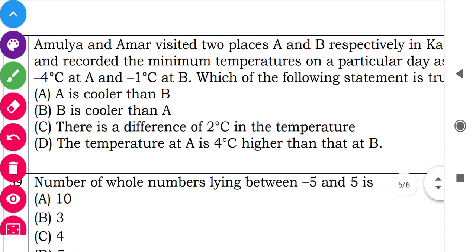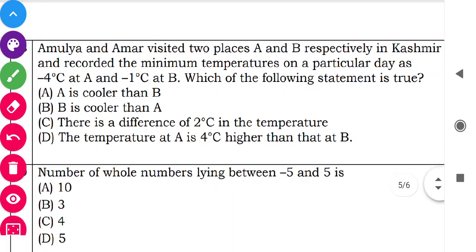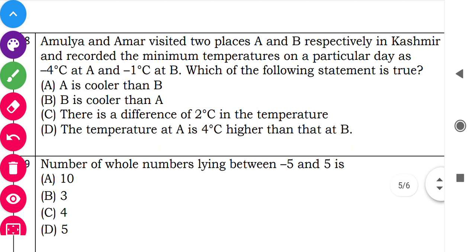Question 38: Amul and Amar visited two places A and B in Kashmir and recorded the minimum temperatures. Place A recorded minus 4 degrees and place B recorded 1 degree. The question asks which option is correct. Option A — 'A is cooler than B' — is correct, since minus 4 is less than 1.